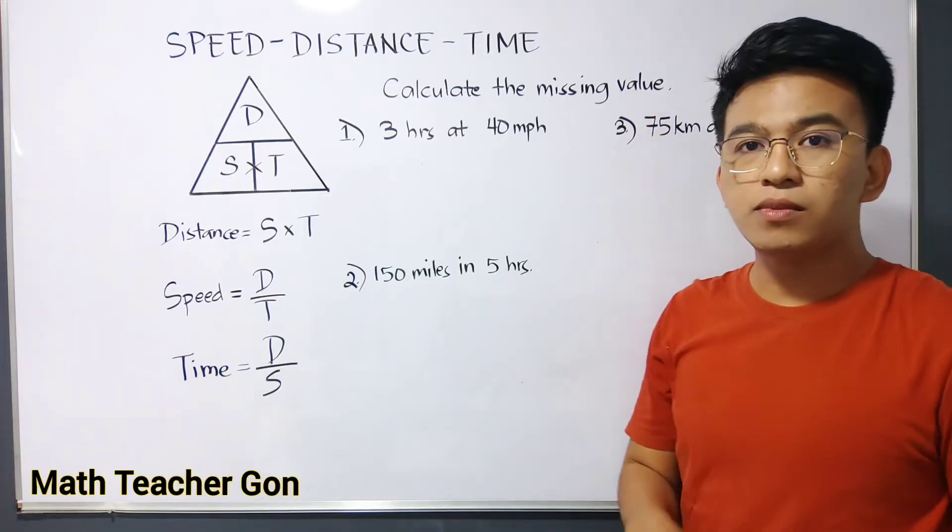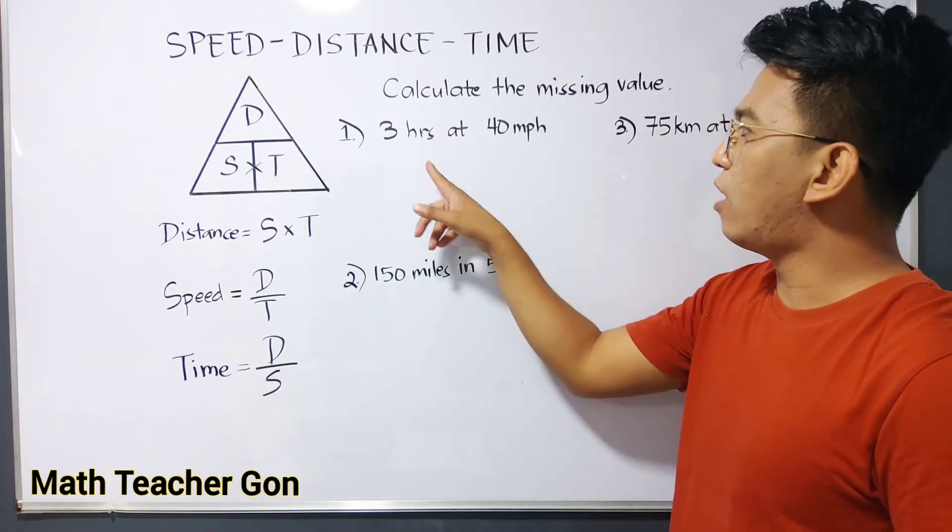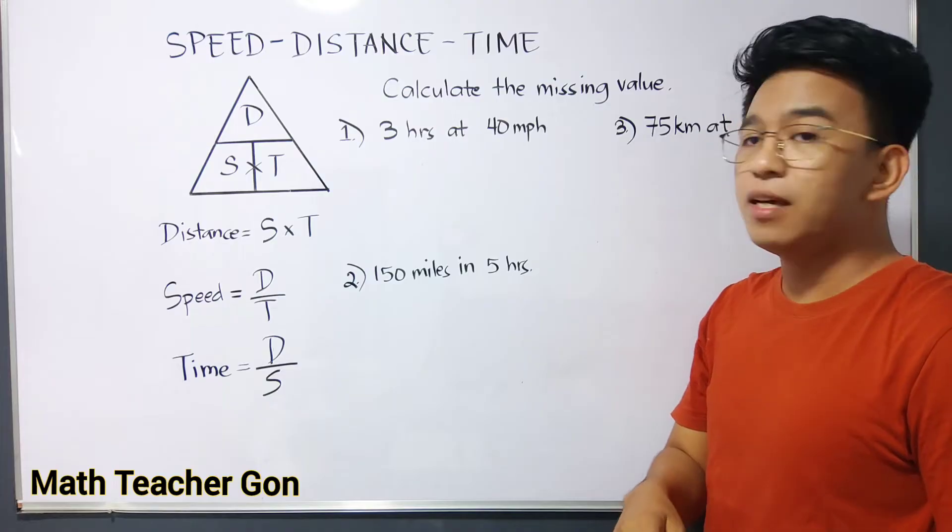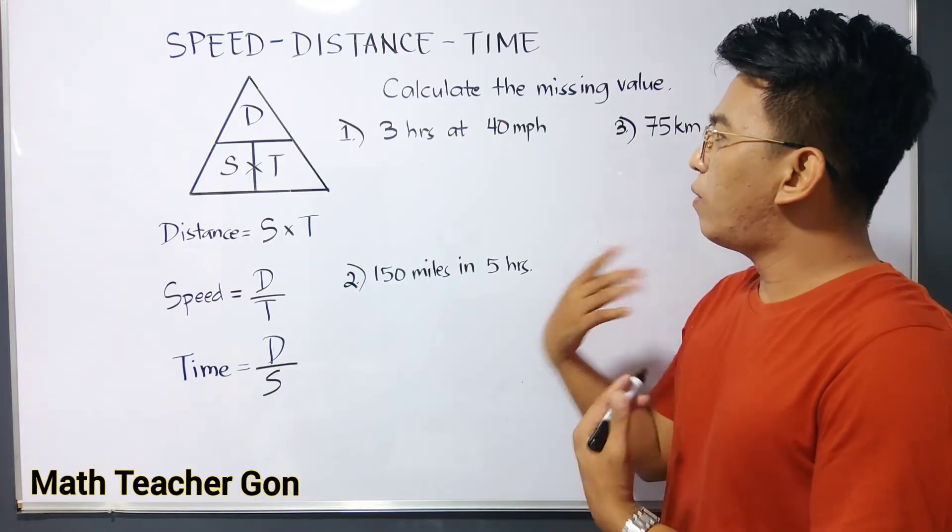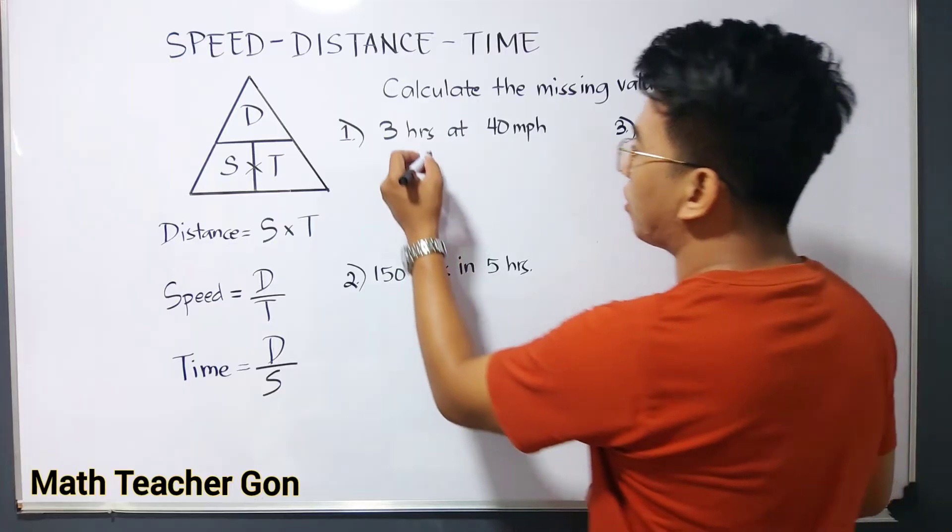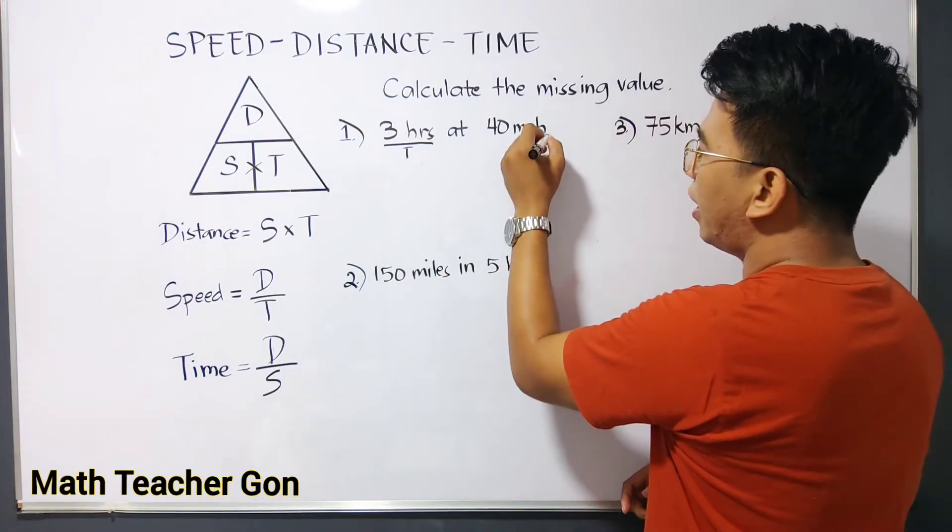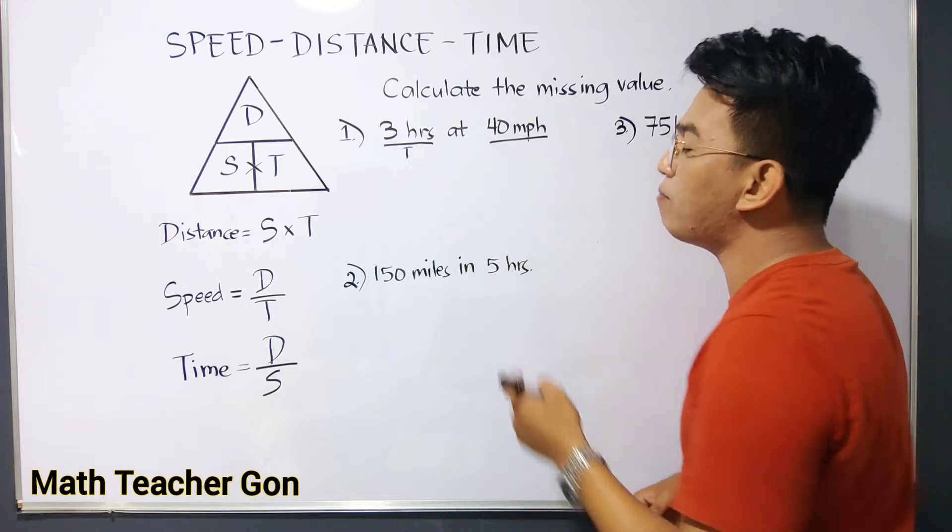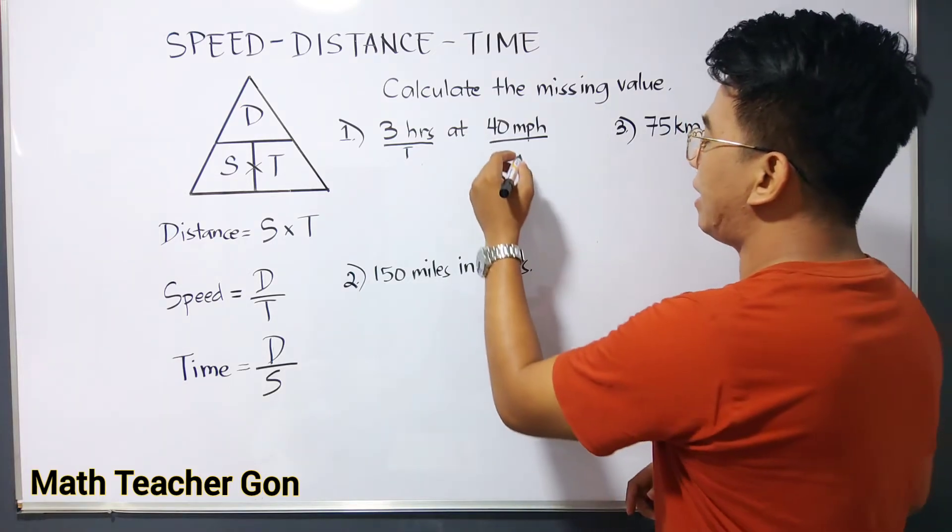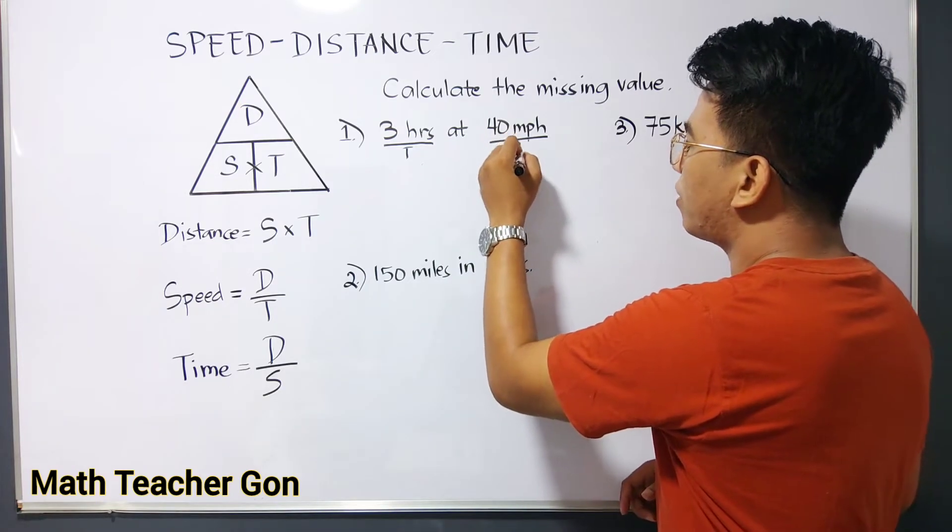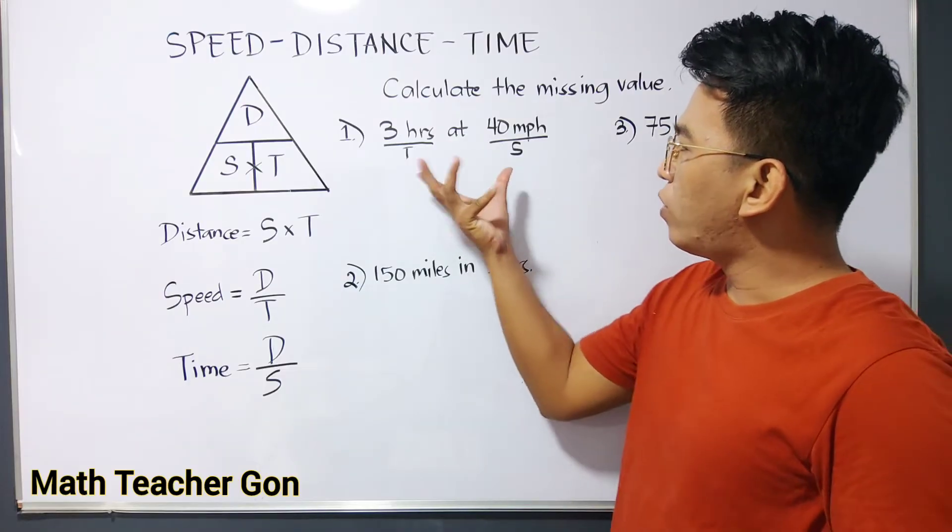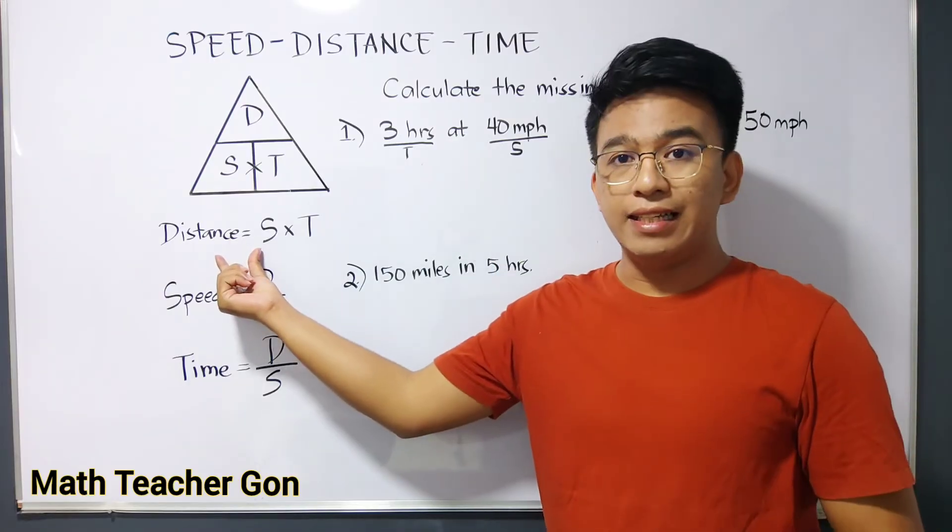In number one, we are given 3 hours at 40 miles per hour. So what's missing here? This is your time, you have your T. And since you have 40 miles per hour, this is under your speed. Therefore, what we need to calculate here is distance.